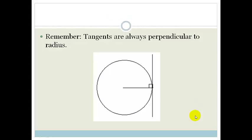Remember, tangents are always perpendicular to the radius. So what does that mean? That means that the gradient of the radius, if this was mR and this was m of the tangent, then we would know that the m of the radius times by the m of the tangent is equal to negative 1. Remember, you learned that last year.